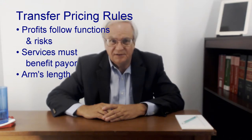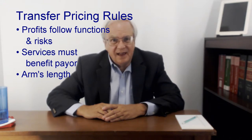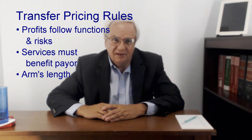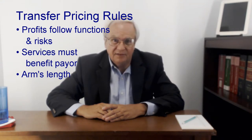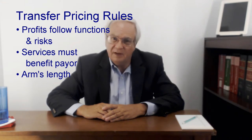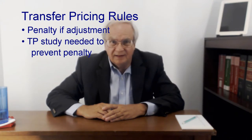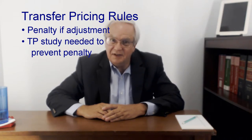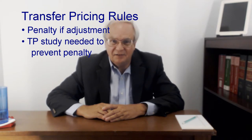Taxpayers can do analyses to determine whether, under one of the applicable testing methods, the prices are within an arm's length range. If they don't, there's no penalty unless the IRS makes an adjustment — then, if the adjustment is above certain thresholds, the IRS can assess a penalty based on the increase in tax.